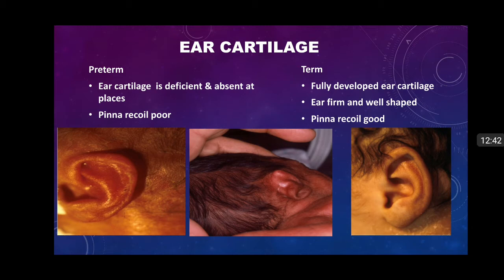The next characteristic is ear cartilage. In term babies, the pinna is well-formed because cartilage is fully developed, while in preterms cartilage is absent at places, making the pinna poorly formed. We also assess pinna recoil: we press the pinna anteriorly and observe how quickly it recoils. In preterms with deficient cartilage, recoil is very poor and slow. In term babies with well-developed cartilage, the pinna recoils quickly.